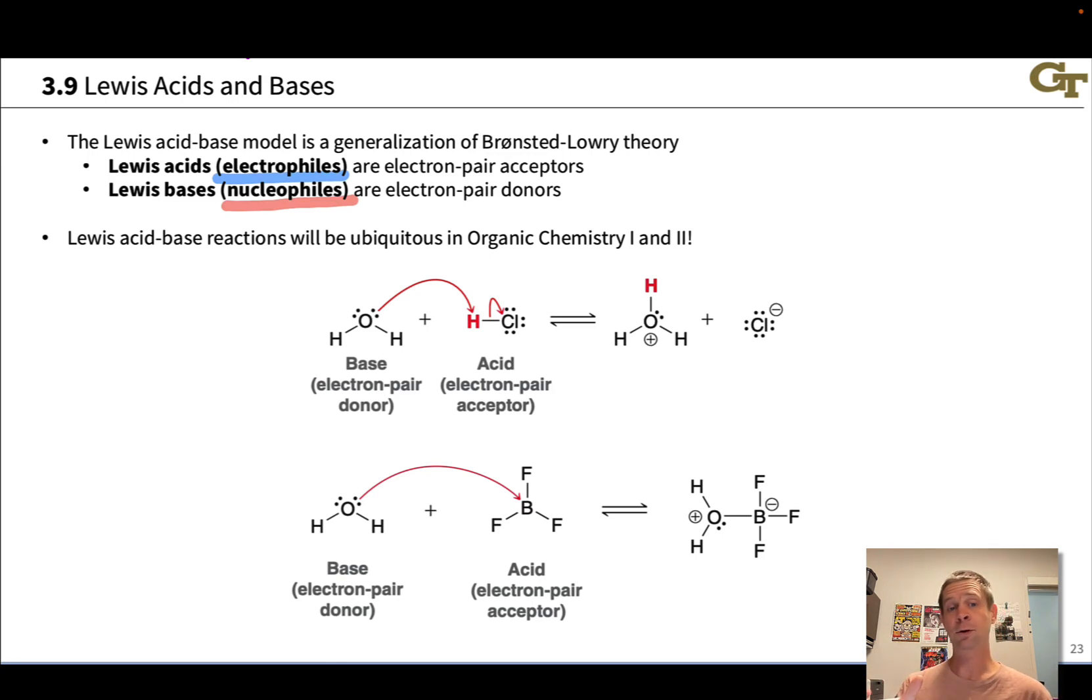So first, let's start with a typical Bronsted acid-base reaction between H2O and HCl. H2O is a Bronsted base, but it's also a Lewis base. It's donating an electron pair. HCl is a Bronsted acid, but it's also a Lewis acid because it is accepting an additional electron pair, particularly at the H. We could think of that H as a Lewis acid.